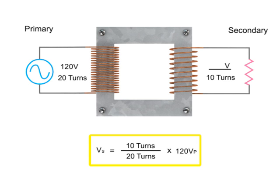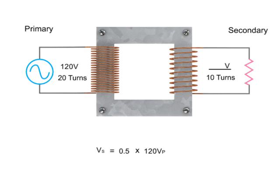Rearranging the formula and then dividing 10 turns by 20 turns, we get 0.5 multiplied by 120 V. This results in a calculated step down voltage of 60 V.